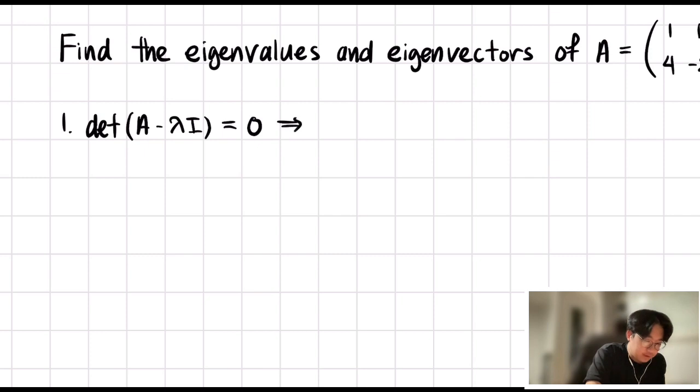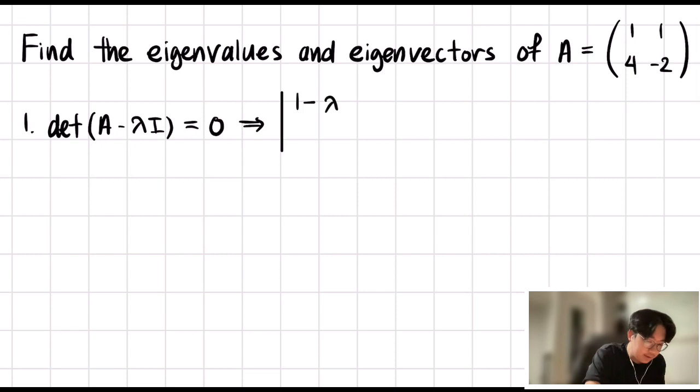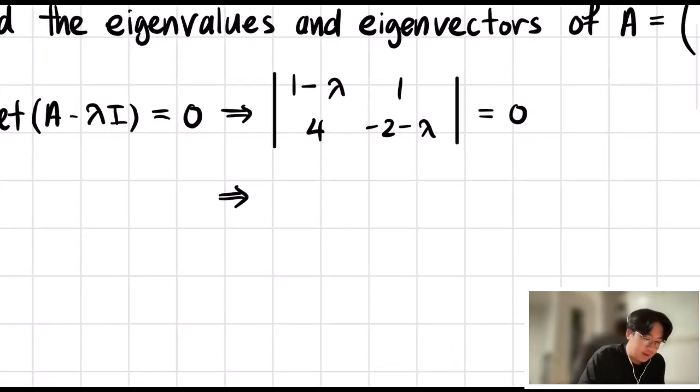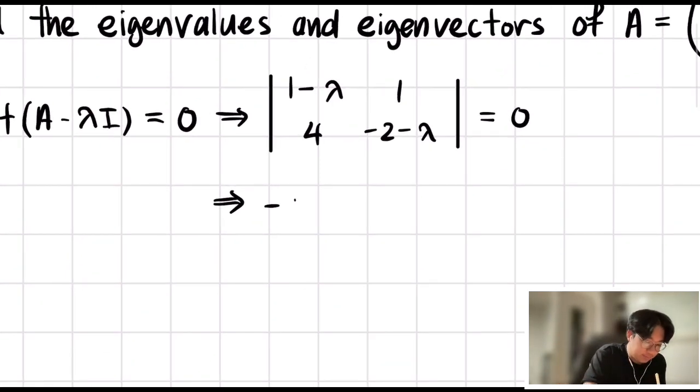Doing so, we have the determinant of 1 minus λ, negative 2 minus λ, 4, and 1. This is equal to 0. From here, we just compute the determinant. You have negative 2 plus 2λ minus λ plus λ squared, and then minus 4 is equal to 0.